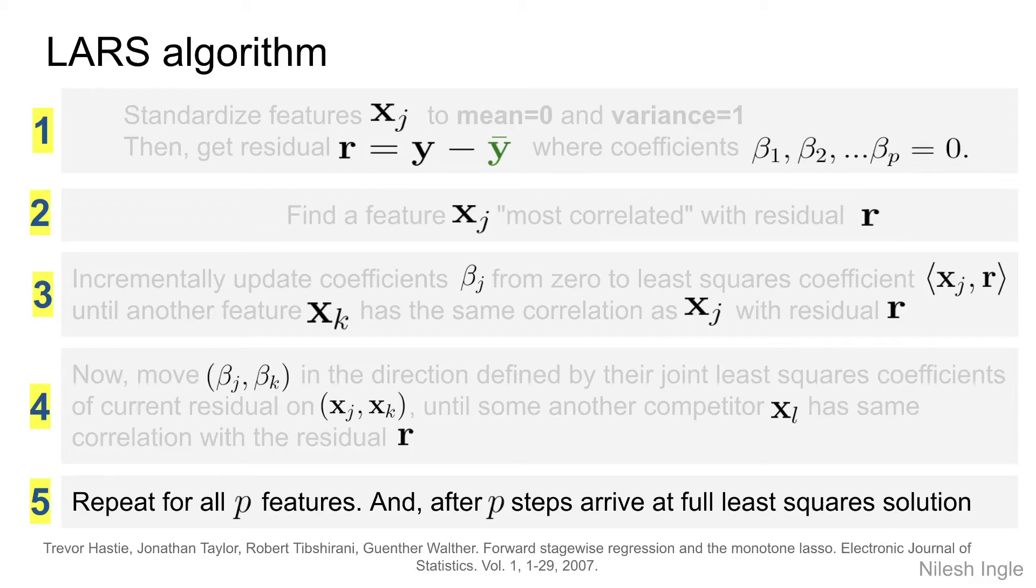We look at the correlation and check with other features to see if any other feature has the same correlation with the residual as the current set of features have, and we want to repeat this process until we reach the full least squares solution.